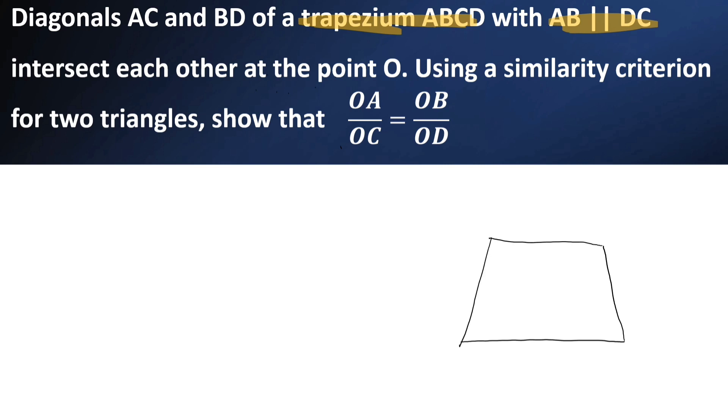This is our diagram. A, B, C, D. AB parallel CD. It is given and diagonals AC and BD intersect at O. This is the figure. Let us have the neat diagram of it.